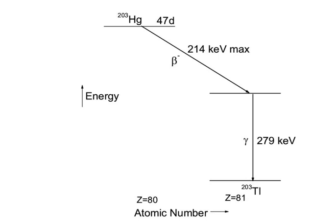This shows that internal conversion is not a two-step process where a gamma ray would be first emitted and then converted. The competition between internal conversion and gamma decay is quantified as the internal conversion coefficient, alpha, which equals the rate of conversion electrons divided by the rate of gamma ray emission.